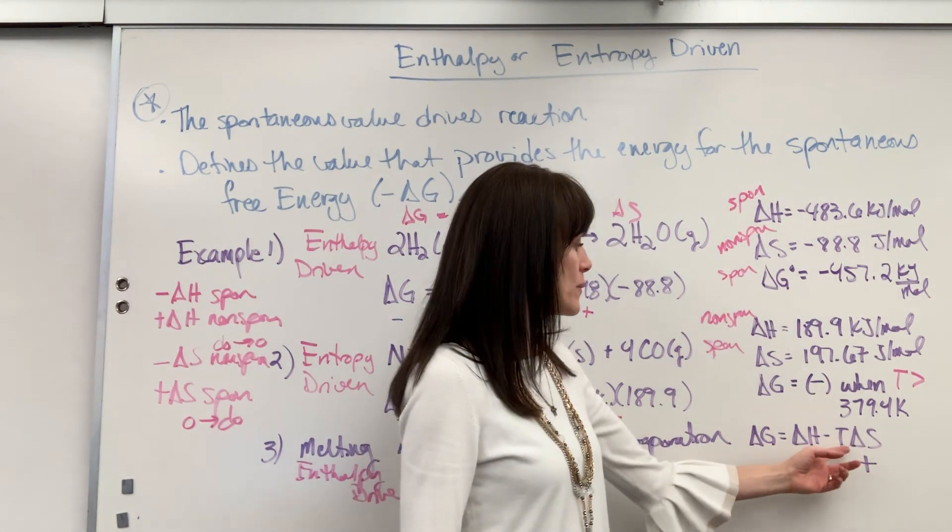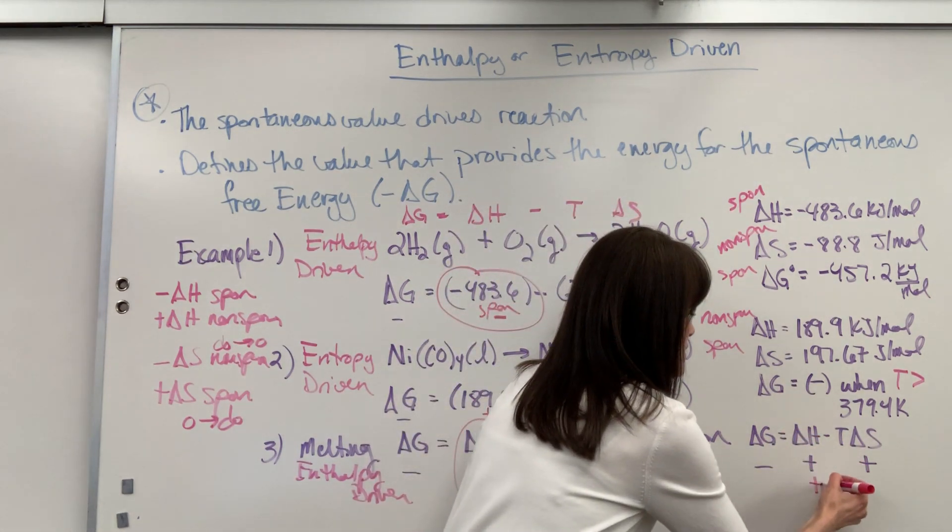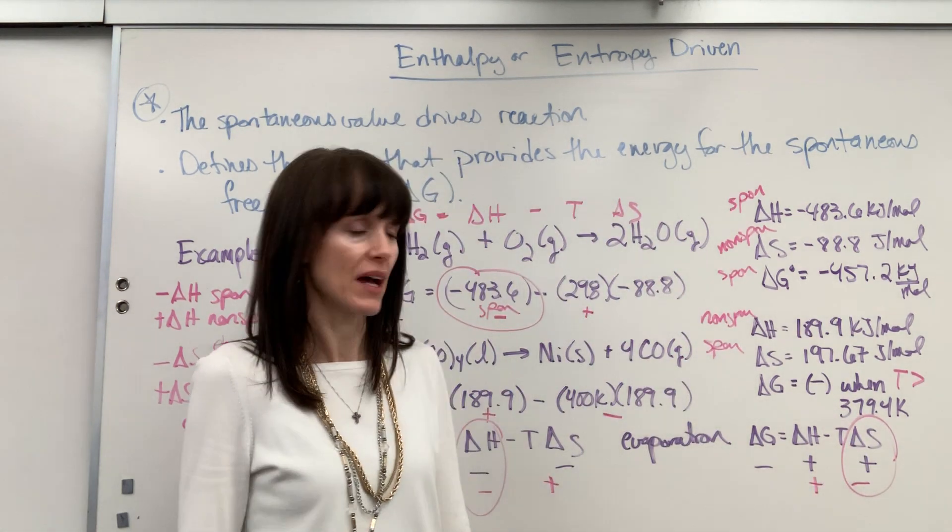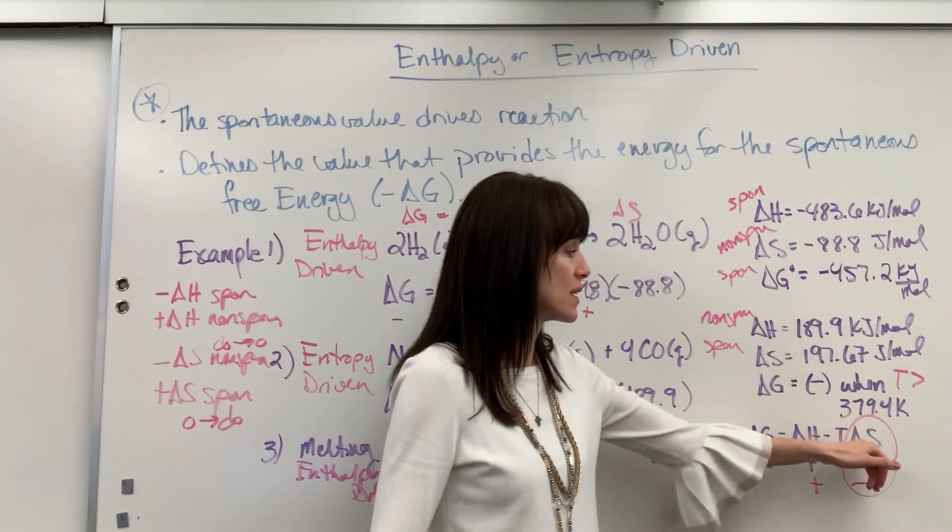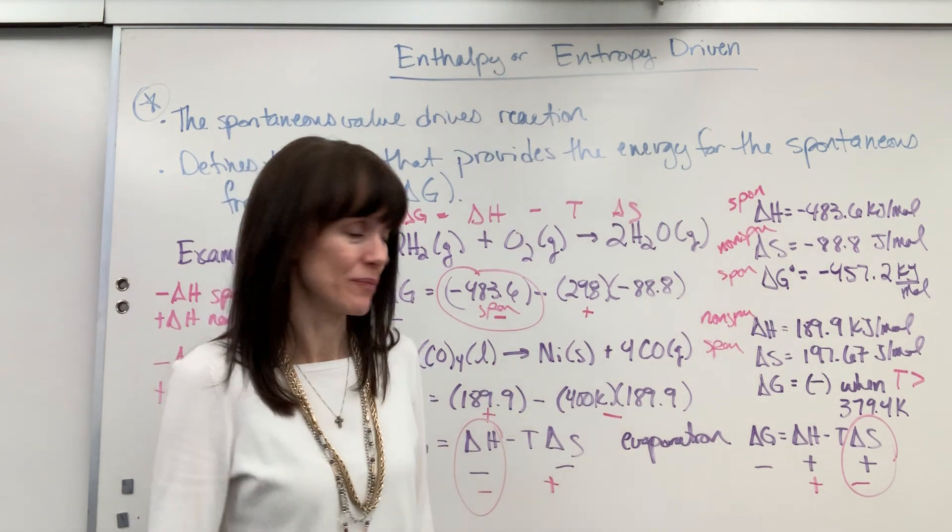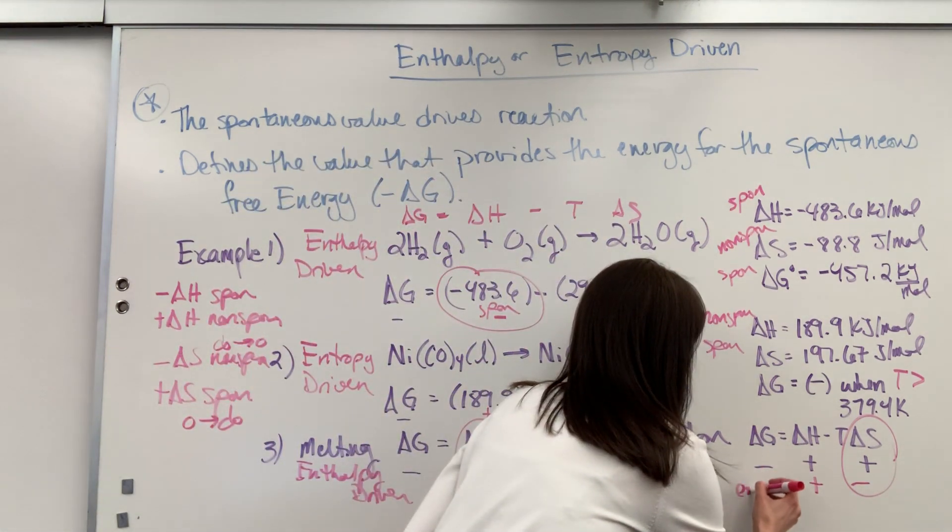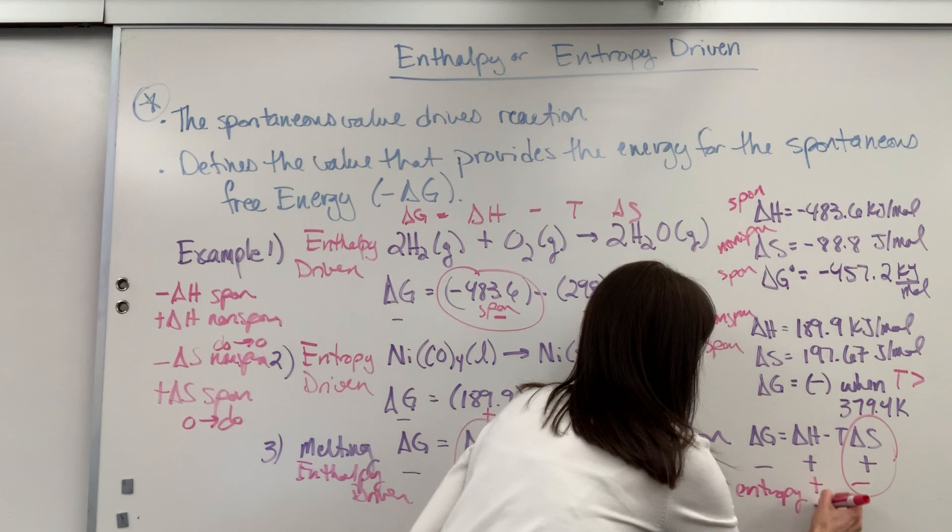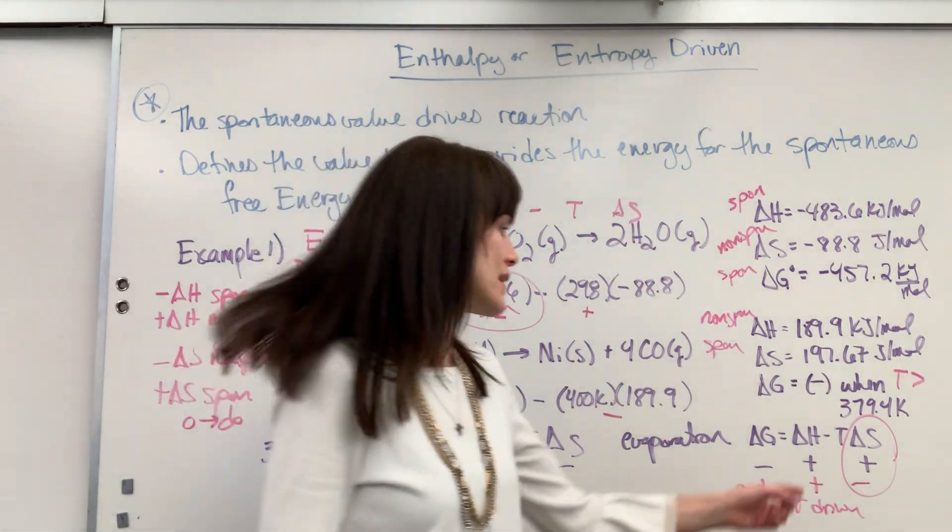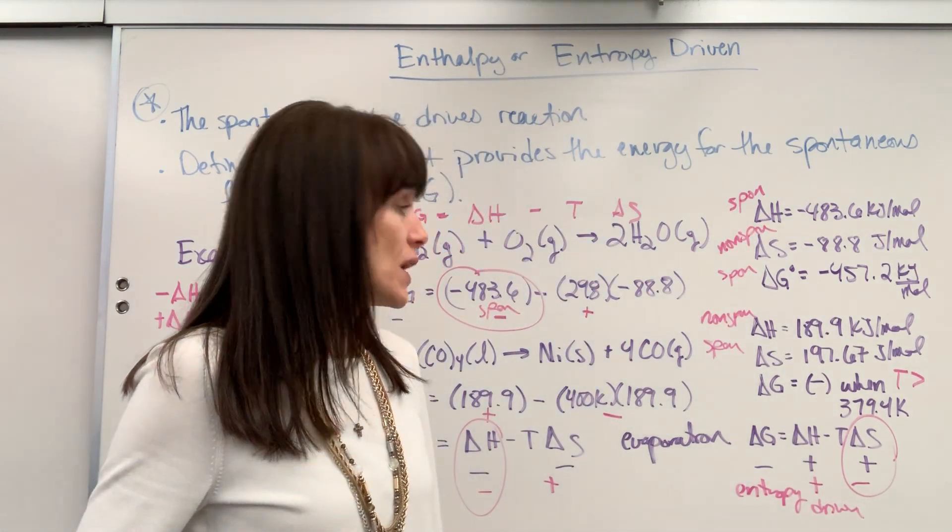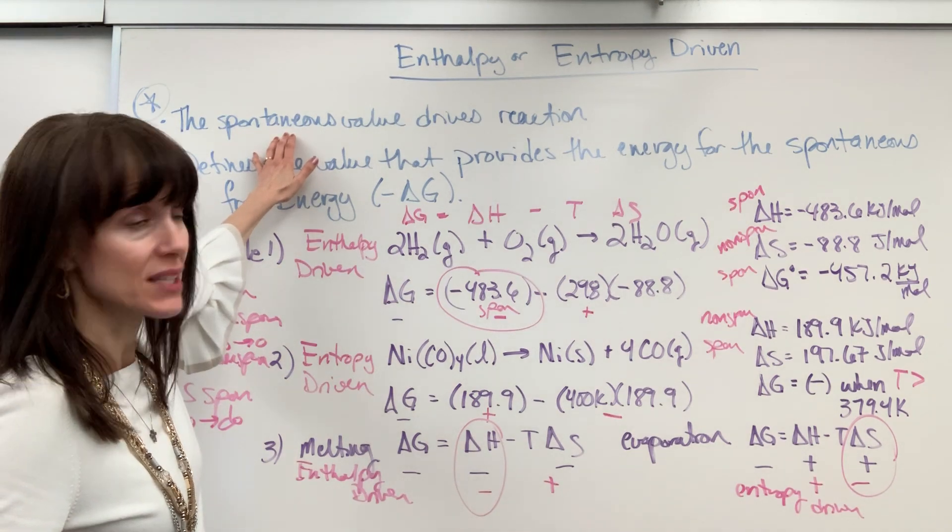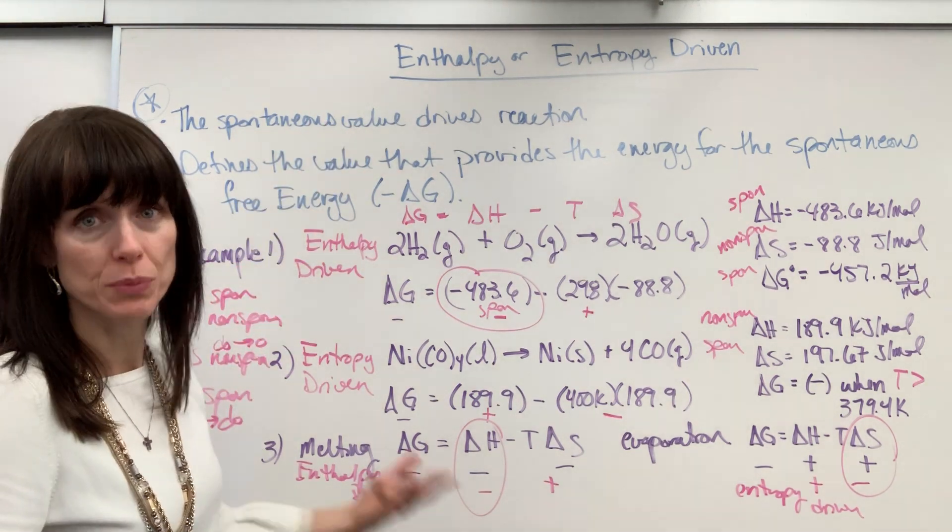Notice, positive for your delta H, negative times positive gives you the negative. It's the delta S that's going to drive that, that provides, it's actually temperature times the delta S is what's going to provide that energy. So here you would say entropy driven. It's the entropy and the temperature that is going to give the energy. So when we say entropy driven, it's understood that it's temperature times entropy. Again, big takeaway comes back here. Whatever the spontaneous value is, delta H or delta S, that's what drives the reaction to provide the free energy.